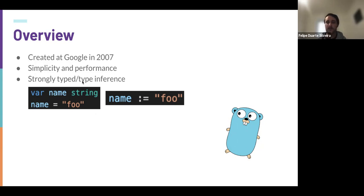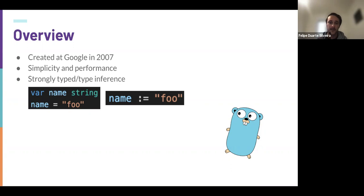Go accepts both notations for variables — you can either define a variable name as type string and assign a value, or the compiler can infer the type from the assignment. After that it's treated as a string and you can't assign other types to it. Everything in Go must be typed: return values of functions, parameters, attributes of a struct — everything is typed, so you always need to be sure of the type you're dealing with.